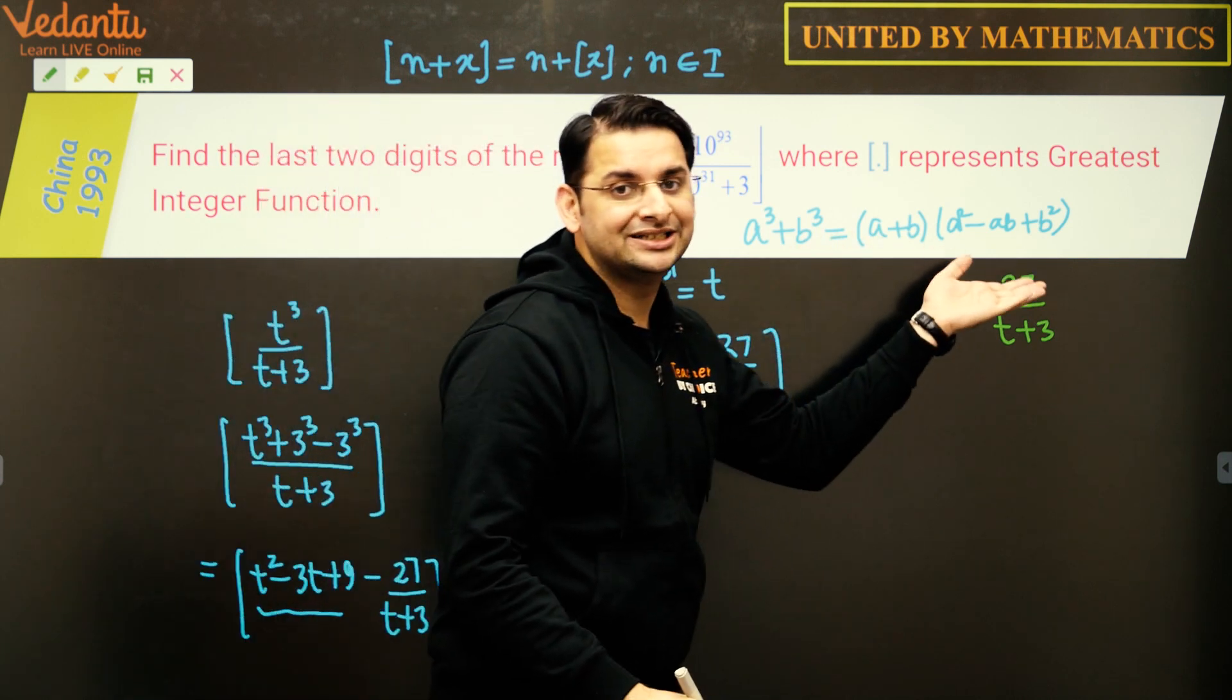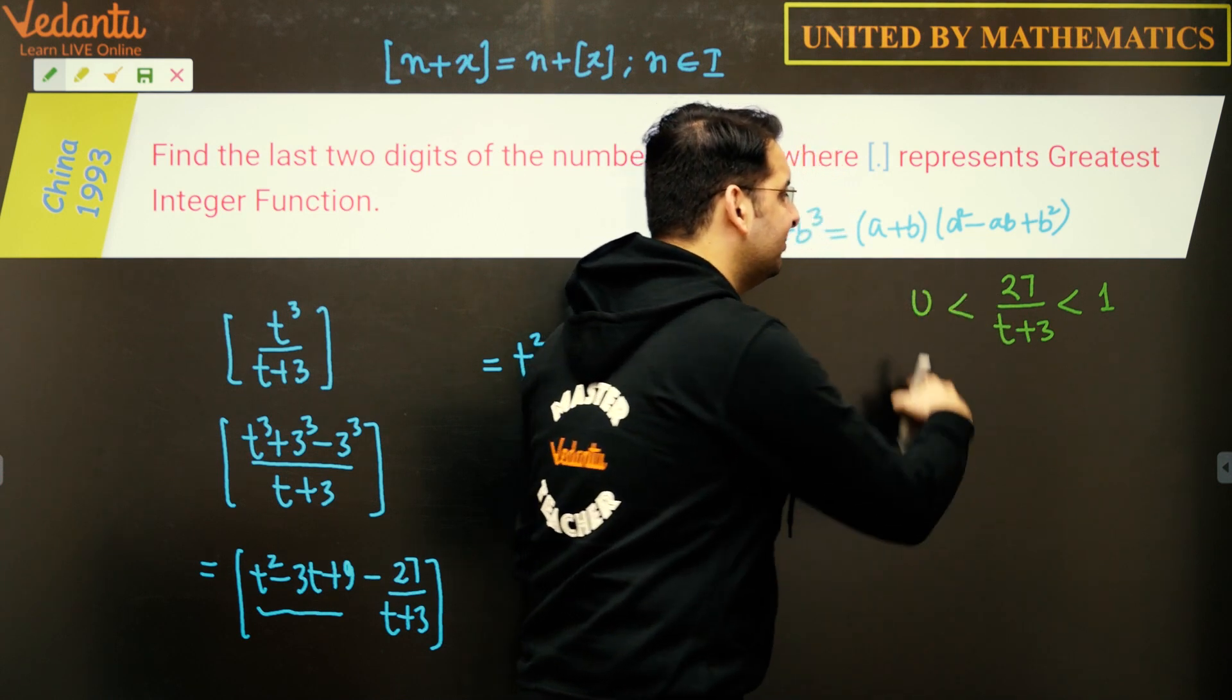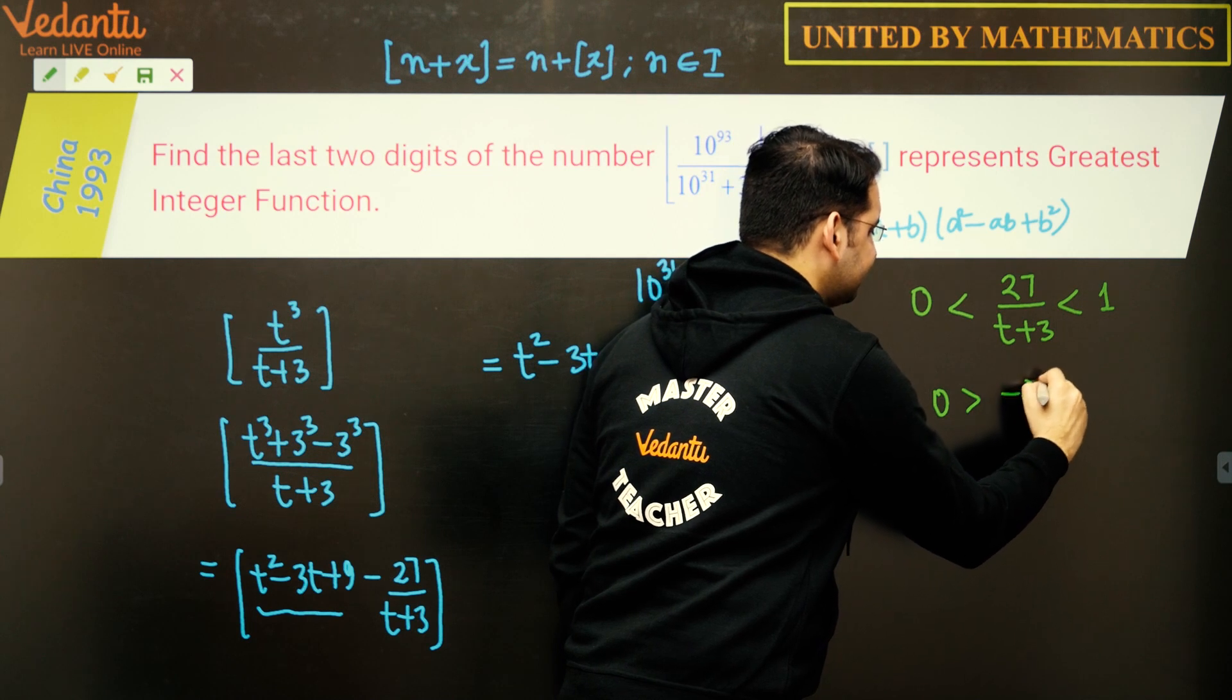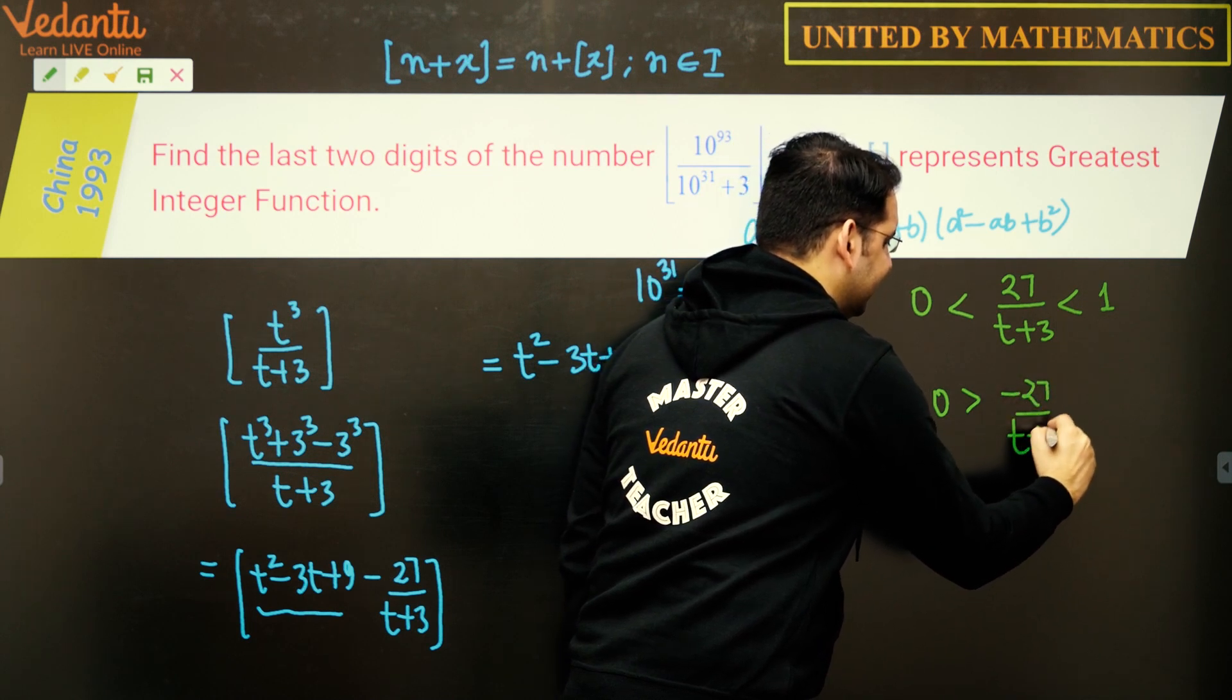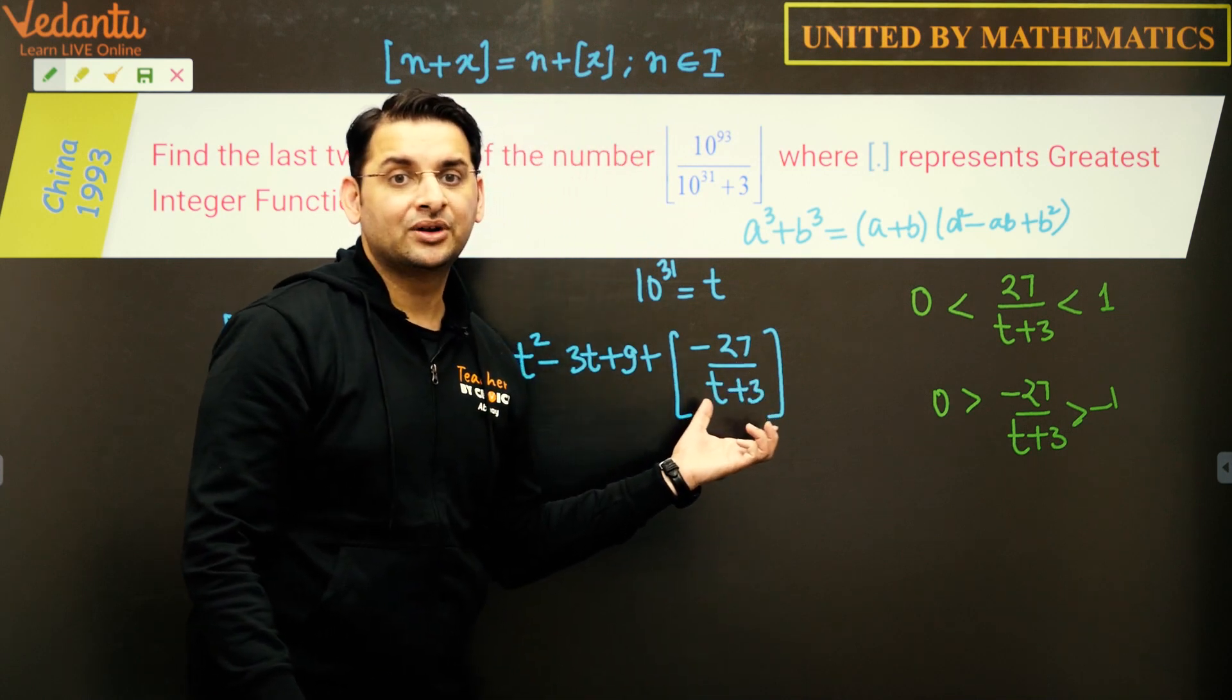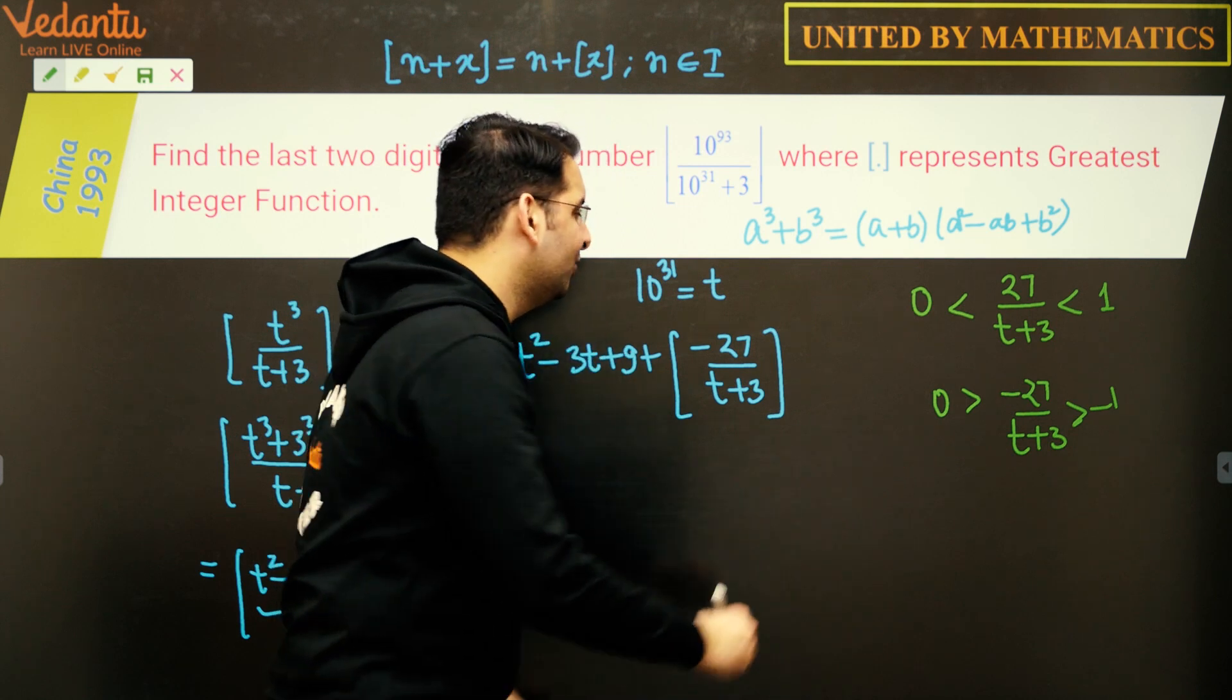Clearly this number is definitely less than 1 and greater than 0. If we multiply this inequality by minus 1, this changes the sign, this changes the sign. So this very number in the greatest integer or the floor function is a number which lies between minus 1 to 0, so the floor function of this is minus 1 clearly.